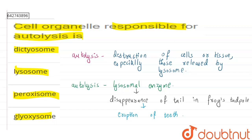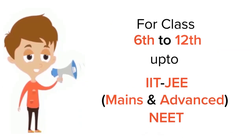So we are asked which cell organelle is responsible for autolysis. In autolysis, there is a release of lysosomal enzymes, so definitely our answer is lysosome, because during autolysis it is the lysosome from which these lysosomal enzymes are released. So our answer is lysosome.